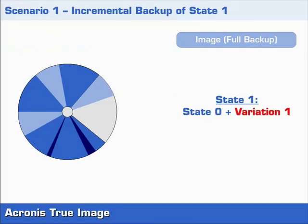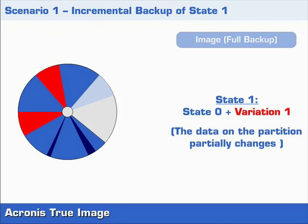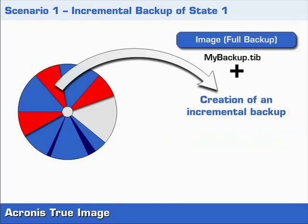We now come to our first scenario where we start with the first step of an incremental backup series. We call this point in time state 1, where we can see that the partition has been changed in various different locations when compared with state 0. The changes from state 0 are signified by the red areas in the diagram. The program concentrates only on the differences that exist between state 0 and state 1, which is the red colored data.